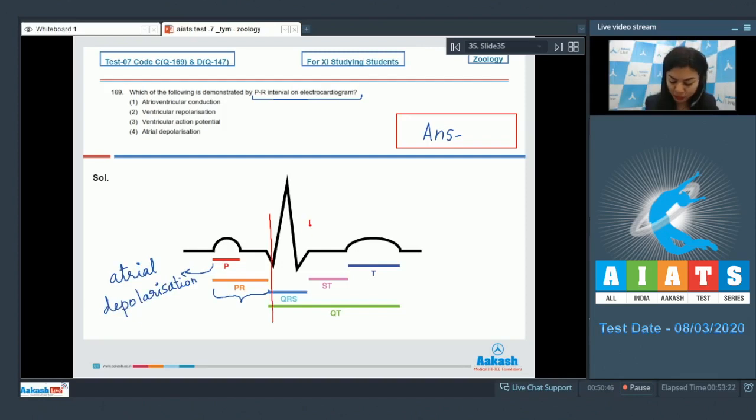Whereas the QRS part represents ventricular depolarization. The points Q, R and S are located at these points.